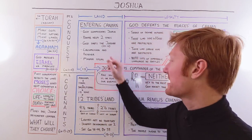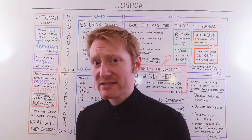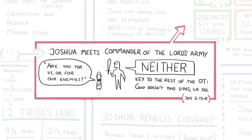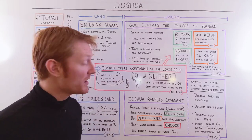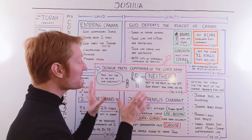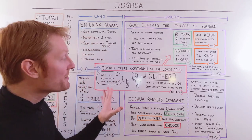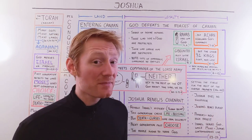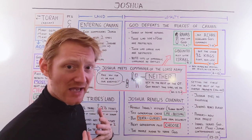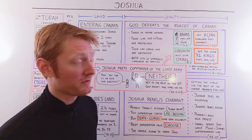At the end of this section, we see a very interesting scene that is the key to understanding the rest of the book of Joshua and really the rest of the prophets in the Old Testament. Joshua sees a man with a sword and asks, 'Are you for us or for our enemies?' The man with the sword says, 'Neither. I am the commander of the Lord's army.' This is very key to understand: God is not on Israel's side. It's going to be up to the people in the book of Joshua and throughout the rest of the Old Testament to make the choice, because God is not taking sides — we take sides.